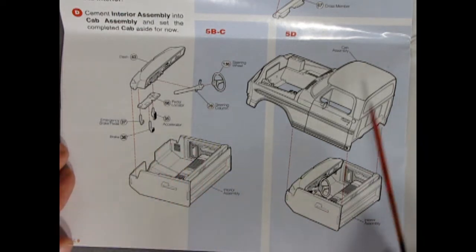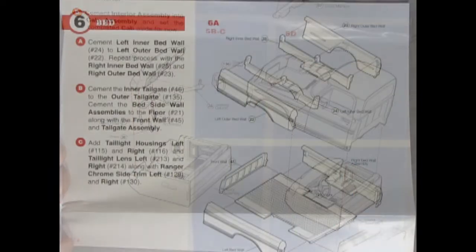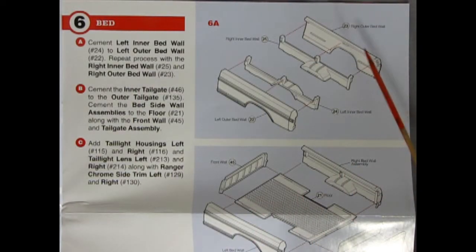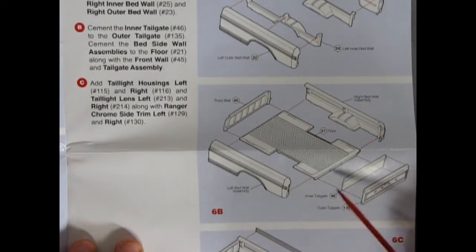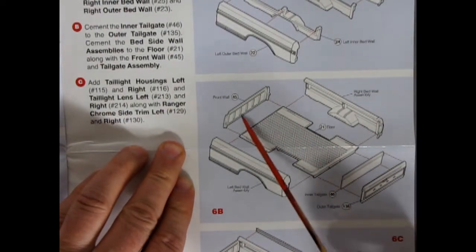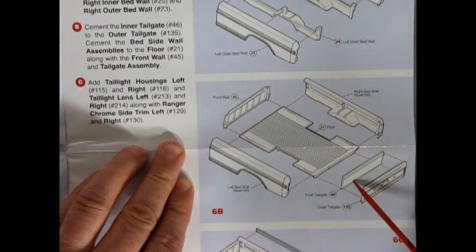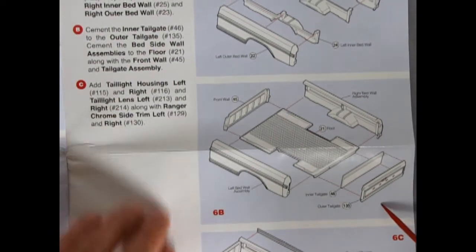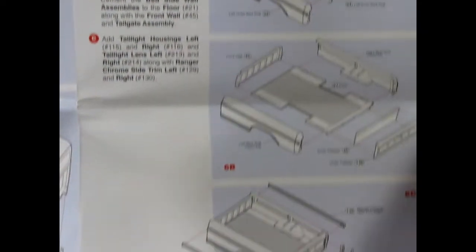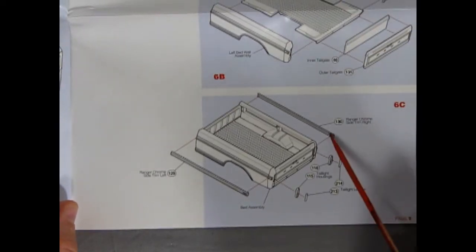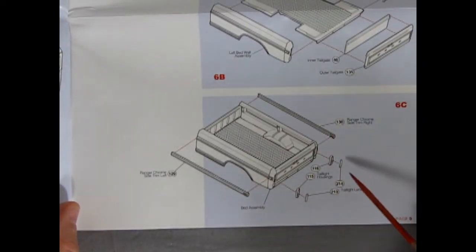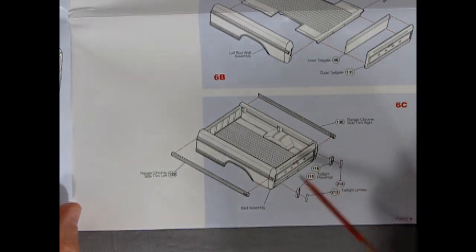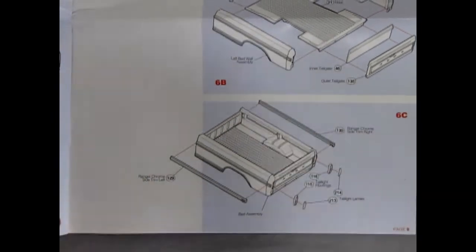There's our steering column and steering wheel, as well as this little pedal locator for our accelerator, brake, and emergency brake pedal. Of course, it's an automatic. And then our cab will pop into our interior. For our truck bed, we have the outers and inners gluing together and our bed walls. And there's a front wall, as well as our inner tailgate and outer tailgate. And then finally, we slap on the Ranger chrome side trims, the taillight housings, and our red taillights all popping back into our truck bed.